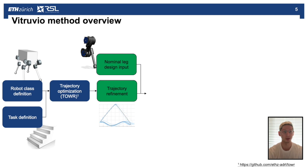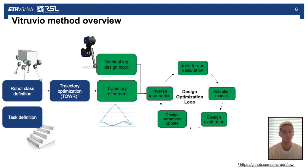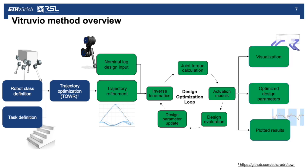We input this trajectory into the Vitruvio toolbox, which is shown here by the green boxes. First we refine the trajectory and we give a nominal leg design as the input. We go through our design optimization loop and as output we get a visualization, the optimized parameters and plotted results.